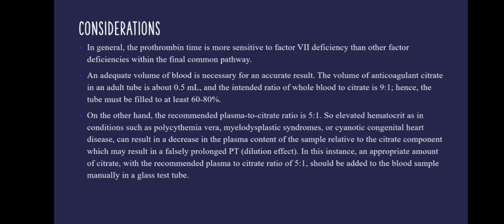While interpreting a Prothrombin Time test, the following factors must be considered. In general, the Prothrombin Time is more sensitive to factor 7 deficiency than to other factor deficiencies in the final common pathway. An adequate volume of blood is necessary for an accurate result. The volume of anticoagulant citrate in an adult tube is about 0.5 ml, and the intended ratio of whole blood to citrate is 9 to 1. Hence, the tube must be filled to at least 60–80%.